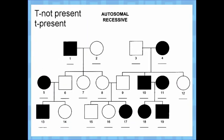Autosomal recessive is pretty much the complete opposite. That means if they have the disease, they are recessive. So the shaded individuals are going to be recessive — little t, little t. I automatically know that all of my shaded individuals are little t, little t, and I'll go ahead and label them all.